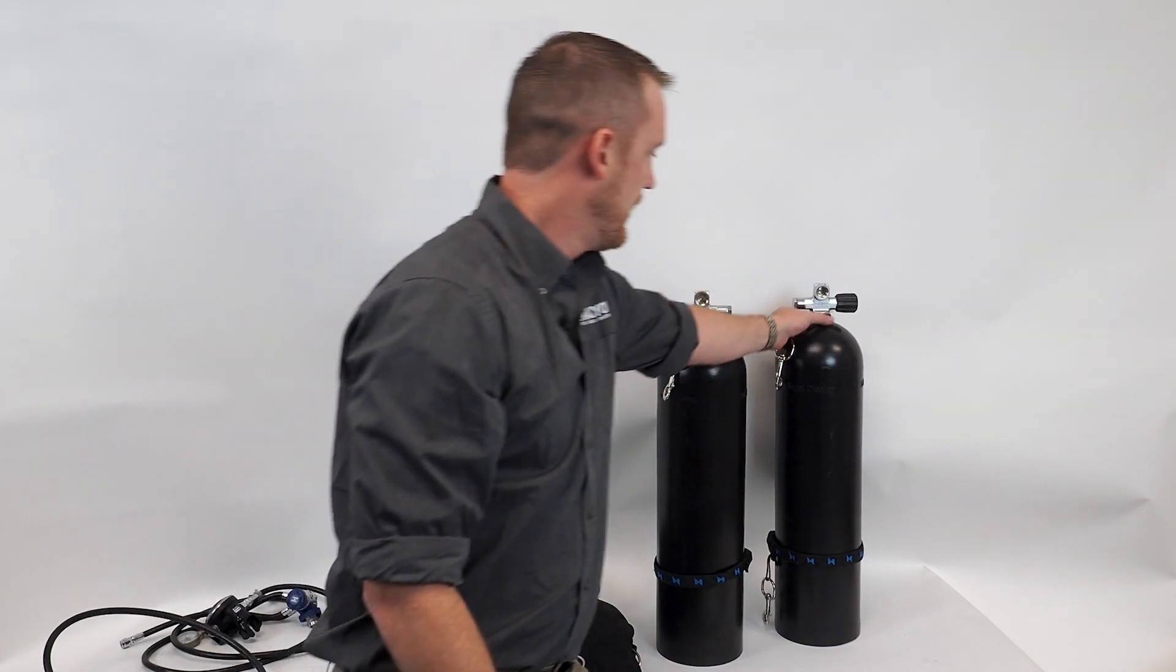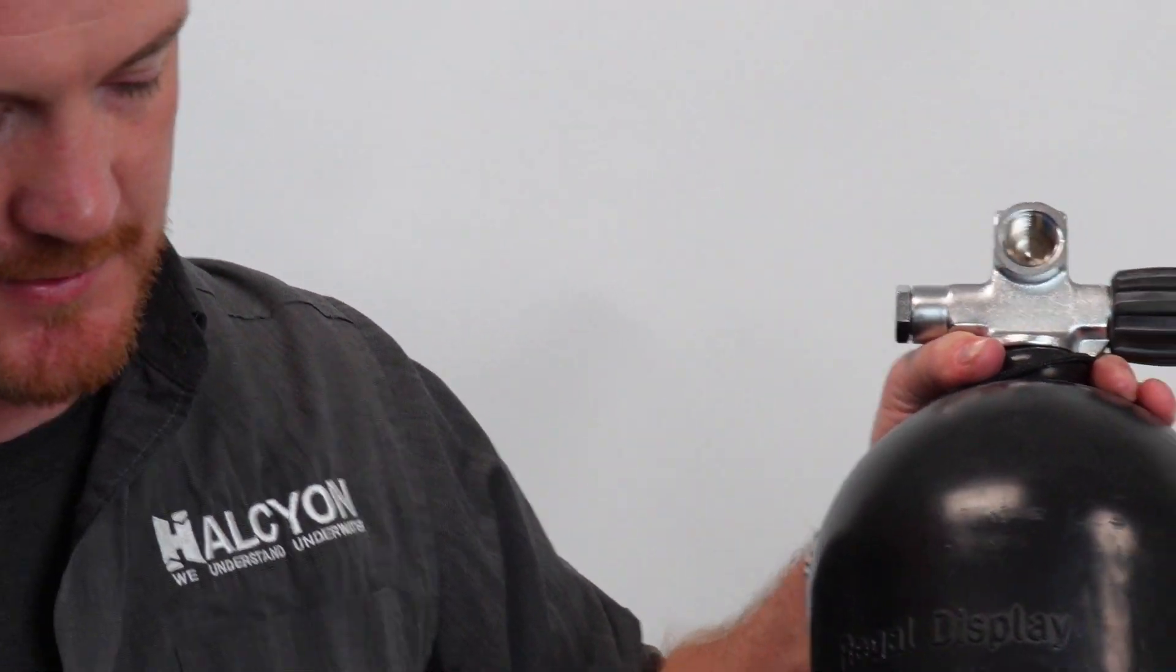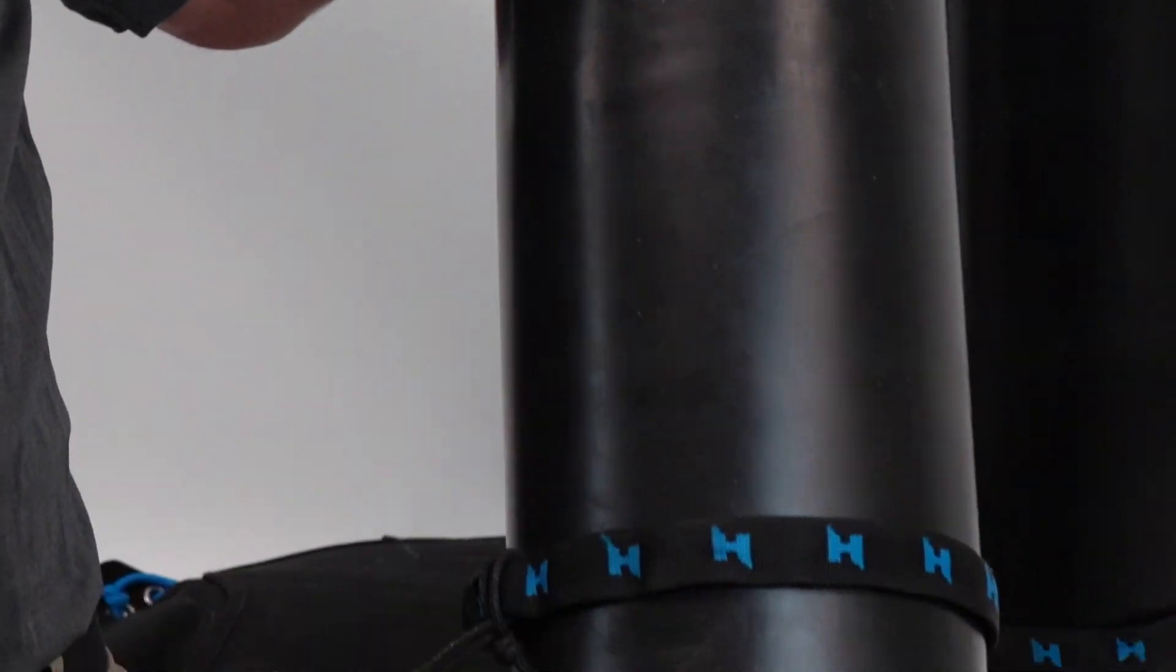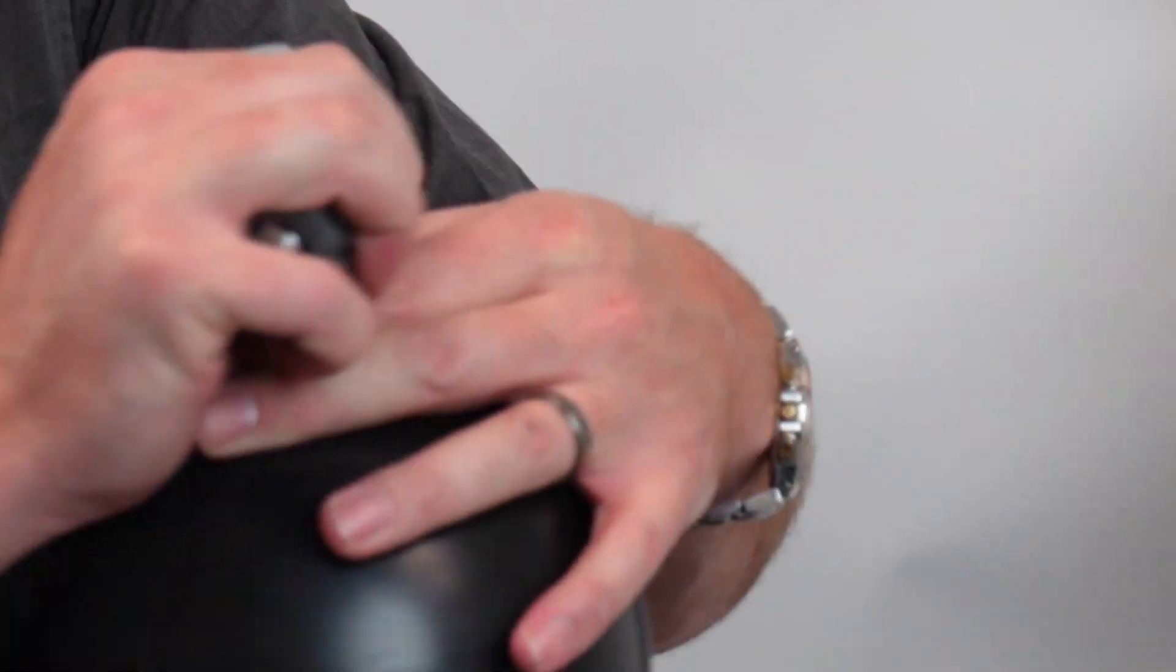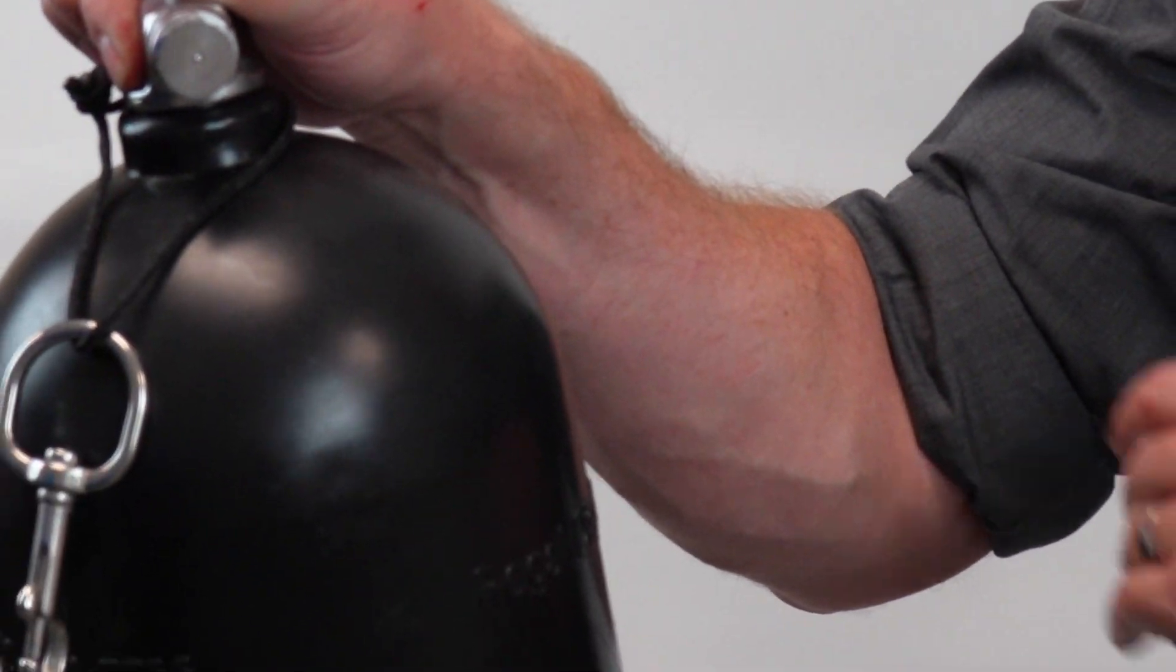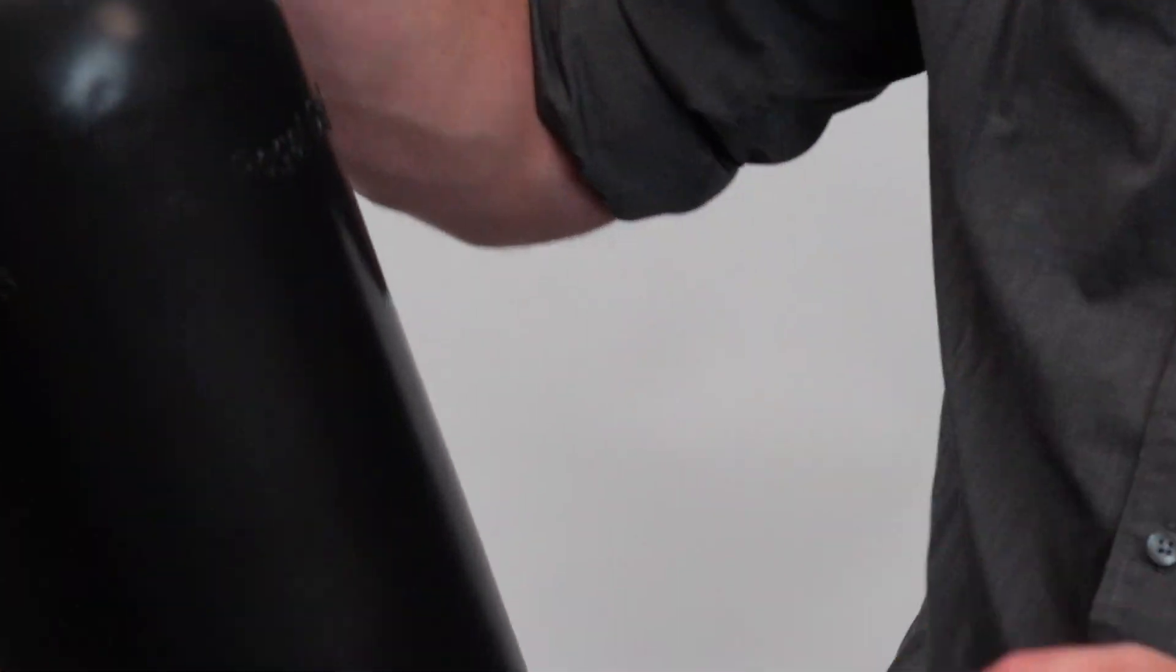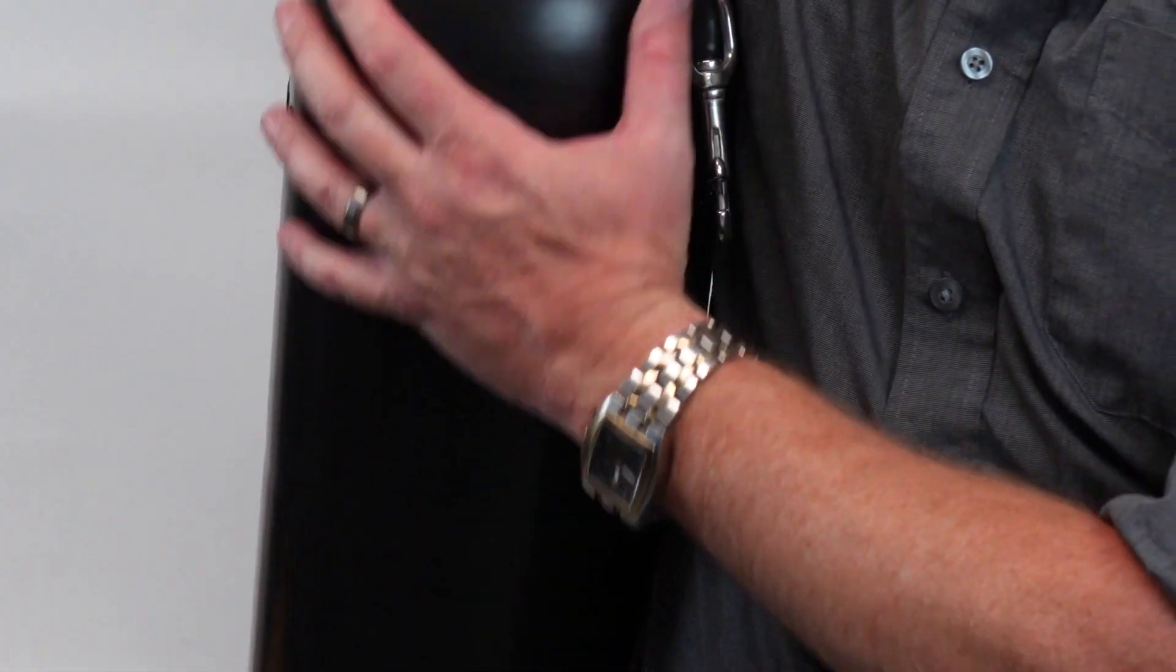On this other cylinder, we have this one rigged up already to show you what these components look like. This can get adjusted depending on your instructor and your agency. Generally, we like to have the valves facing us. A lot of us dive it that way so the valves are protected and the first stages are protected. The cylinder then would clip to our side and everything is protected next to us.